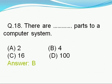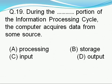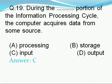Question number 19: During the dash portion of the information processing cycle, the computer acquires data from some source — option A: processing, option B: storage, option C: input, option D: output. Right answer is C, i.e., input. During the input portion of the information processing cycle, the computer acquires data from some source.